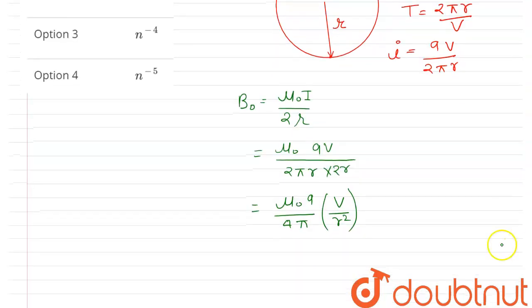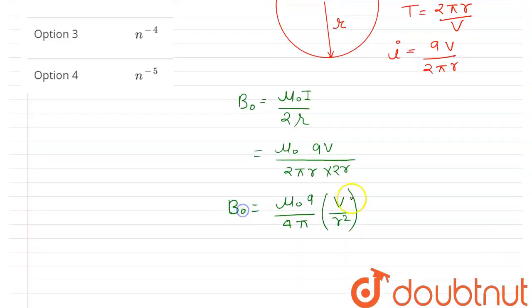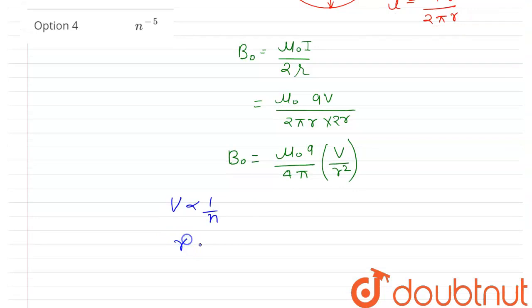Now we know that the magnetic field is proportional to v/r. We know that the velocity is inversely proportional to principal quantum number n, and the radius is directly proportional to n².